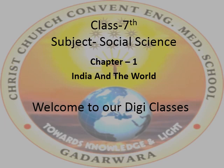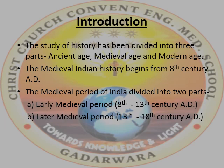In class 6th, you have studied the History and Culture of Ancient Era. Now in class 7th, you will learn about the History and Culture of Medieval Era. History has been divided into three parts: Ancient Age, Medieval Age, and Modern Age.